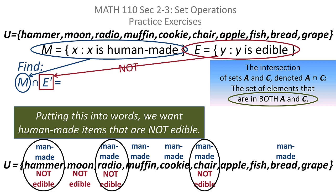So I'm looking for things in the universal set that are human-made but not edible. Hammer, radio, and chair are all human-made but they're not edible. So that is the intersection of those two sets: hammer, radio, chair.